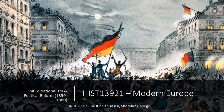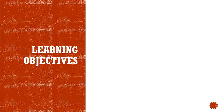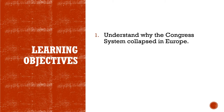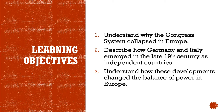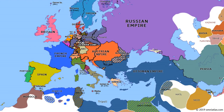Hello, Modern Europe, and welcome to Unit 6: Nationalism and Political Reform. We are almost to reading week — how exciting! Today we're going to end the first half of the term with an exciting development: the creation of two brand new countries, Germany and Italy, which will completely upset the balance of power in Europe and ultimately lead to the First World War. The learning objectives for this unit are: number one, understand why the congress system collapsed in Europe; number two, describe how Germany and Italy emerged in the late 19th century as independent countries; and number three, understand how these developments changed the balance of power in Europe.